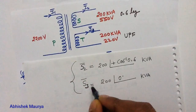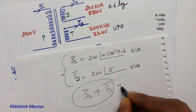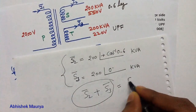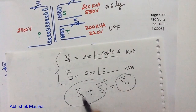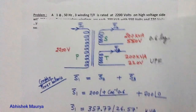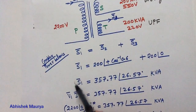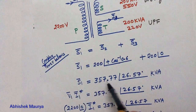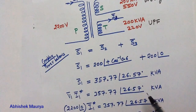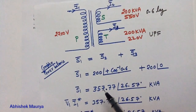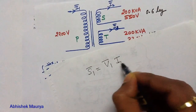S2 plus S3 is the total complex power output, and S1 equals this total complex power output. Using a calculator to add these two values, we get S1 equals 357.77 kVA at angle 26.57°. The complex power input can also be written as V1 times I1 conjugate.